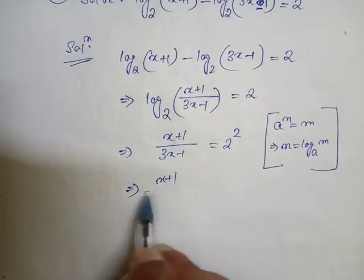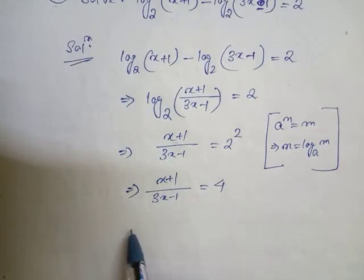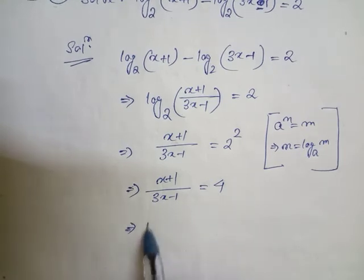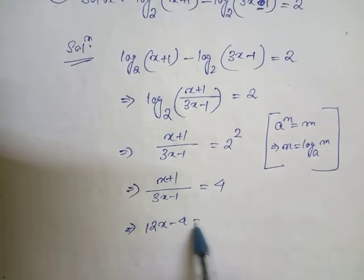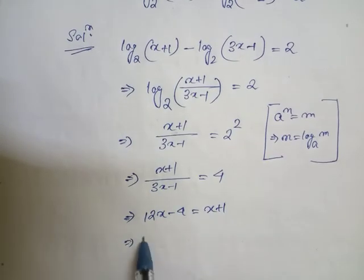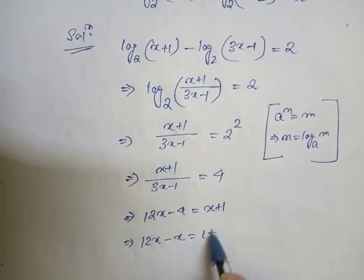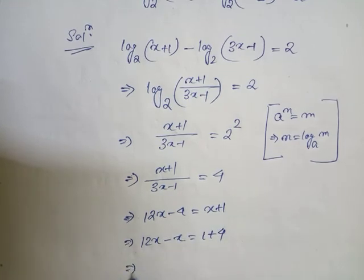After cross multiplication, we get x+1 equals 4 times (3x-1), which gives 12x minus 4 equals x plus 1. Rearranging, we get 12x minus x equals 4 plus 1, so 11x equals 5.